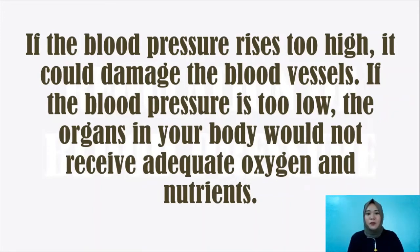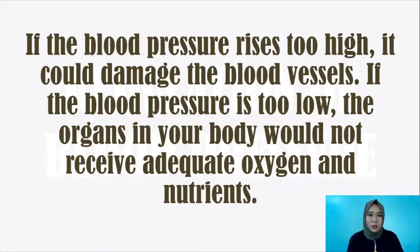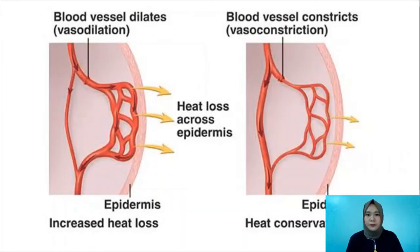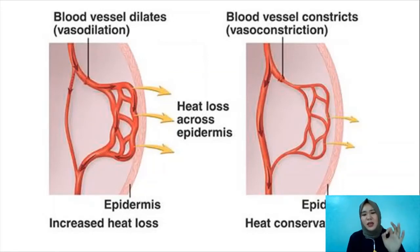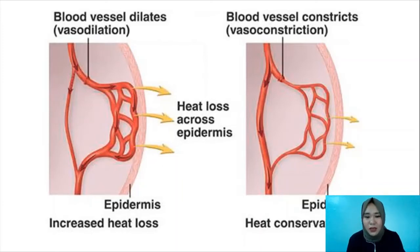If blood pressure is too low, your organs would not be able to receive adequate amounts of oxygen and nutrients. There are two important terms: vasodilation — when your blood vessels dilate or expand — and vasoconstriction — when your blood vessels constrict or become smaller. As you can see in the diagram, a dilated blood vessel looks expanded, and blood flows faster through it, releasing heat more quickly from the skin's surface.